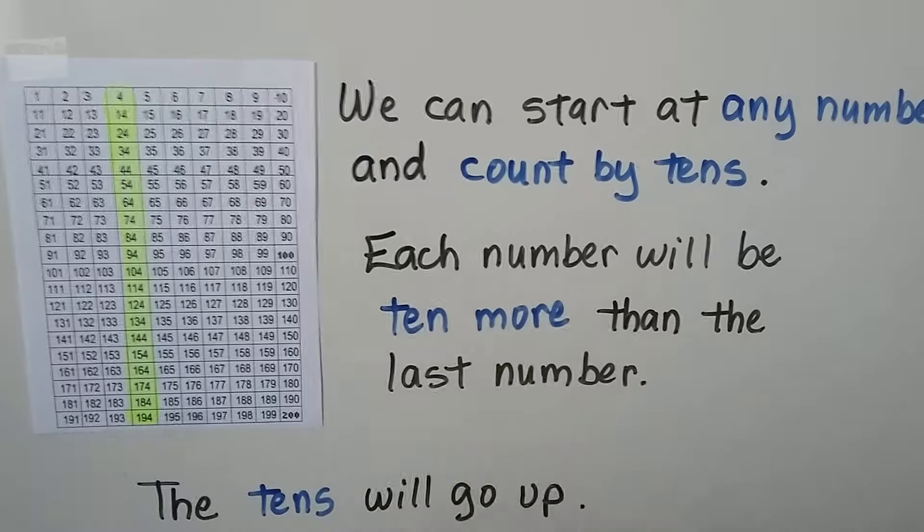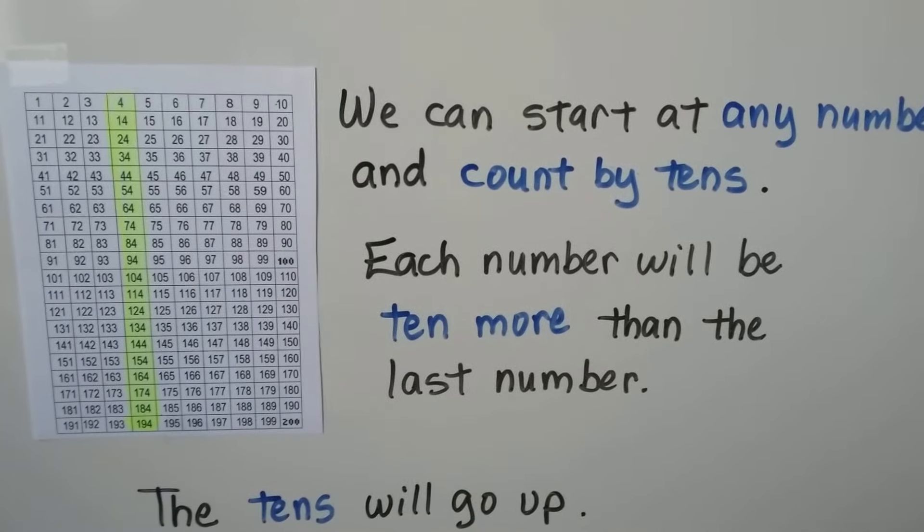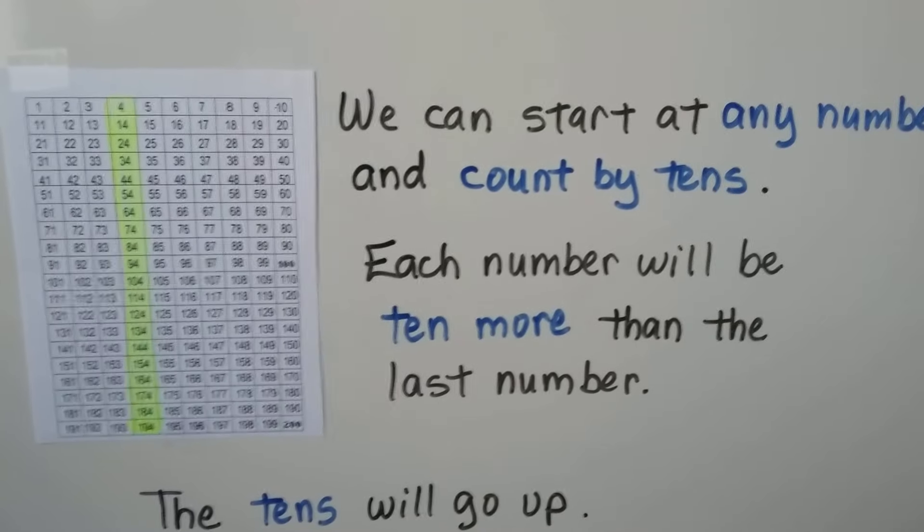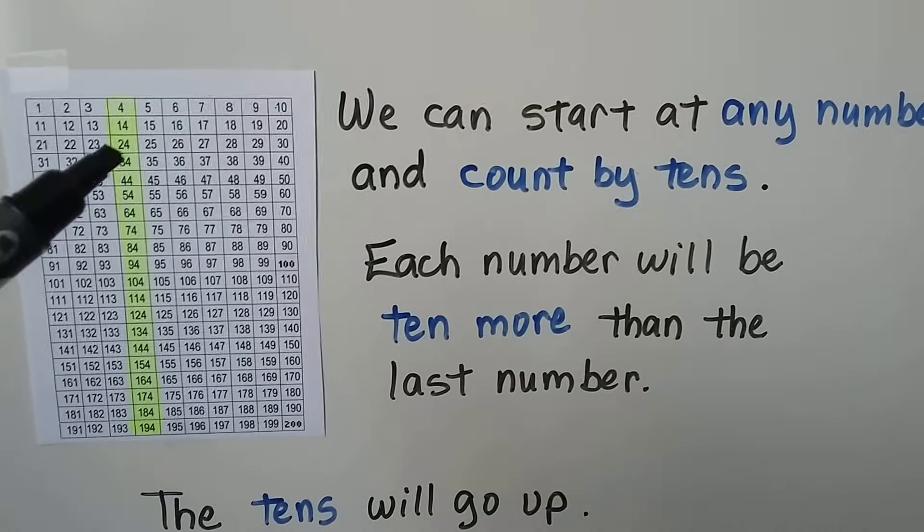See the pattern? Each number will be 10 more than the last number. 34 is 10 more than 24. The tens will go up. The ones will stay the same. We have a four for our starting number.